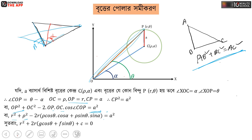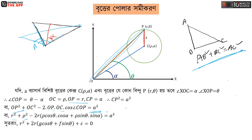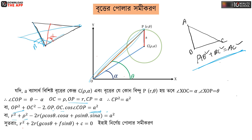We can say the answer is r squared plus rho squared. We can say we have r² plus 2r into g·cosθ plus f·sinθ plus c equals 0. We can say this is a squared, and this is 2r·rho. We go into cosθ and sinθ.